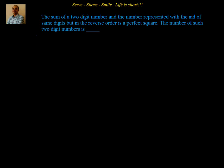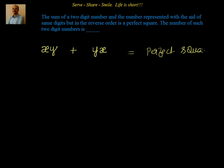Hello friends, welcome. Let's look at this example problem: the sum of a two-digit number and the number represented with the same digits but in reverse order is a perfect square. The number of such two-digit numbers is how much? So let's try to understand this. We will take a two-digit number — let the two-digit number be xy. The reverse digit number will become yx. They are saying the sum of xy and yx is a perfect square.